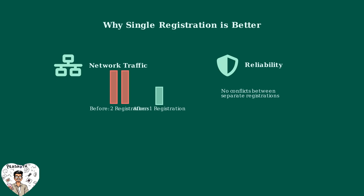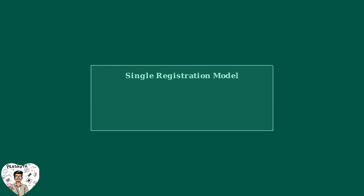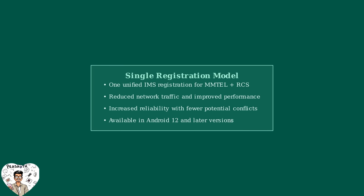First, it reduces network traffic because there's only one registration process instead of two. Second, it increases reliability by eliminating potential conflicts between separate registrations. Third, it improves overall performance by streamlining the communication process. The single registration model represents a major step forward in mobile communication efficiency — by unifying MMTEL and RCS under one registration, Android 12 has made our devices faster, more reliable, and easier on the network infrastructure.